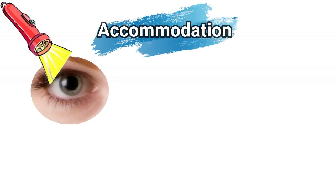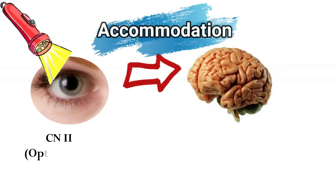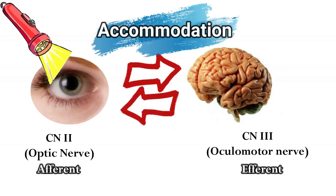Now let's talk about accommodation. If somebody shines a flashlight in your eyes, this light is going to be received by the retina. The retina, as we know, is cranial nerve number two, the optic nerve. So the afferent is the optic nerve, and the efferent coming back will be the oculomotor nerve, which will constrict the pupils.